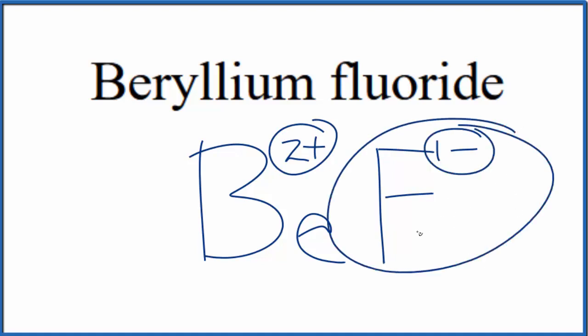If we had two of these fluoride ions, put a 2 here. Two times 1- is 2-, which would balance out this 2+.